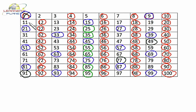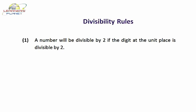So let's continue with the session and discuss more concepts. Now let's discuss divisibility rules. Without performing actual division, we can come to know whether a given number is divisible by any other particular number or not. So these sorts of rules are called divisibility rules. For different numbers, different rules of divisibility are there. Let's discuss them one by one.